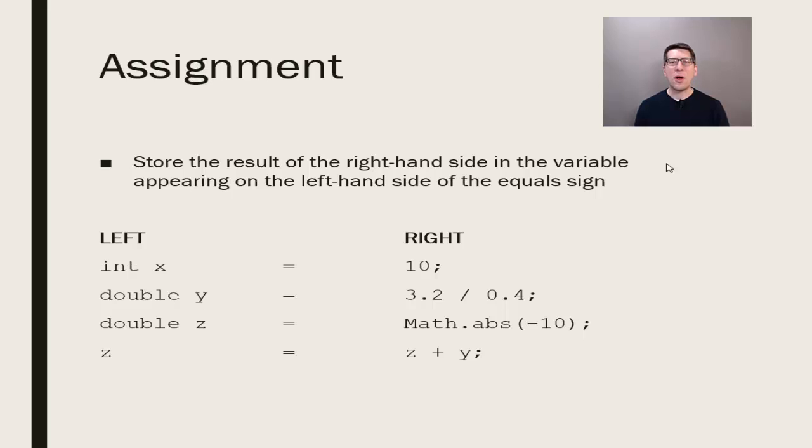When it executes, the right-hand side is resolved in its entirety before the assignment occurs. Variables on the right-hand side are first replaced with the values that are stored in these locations at the moment that this line of code is executed.